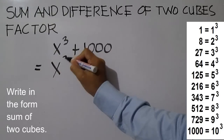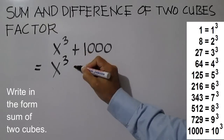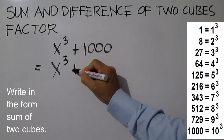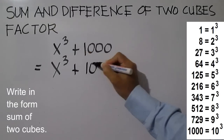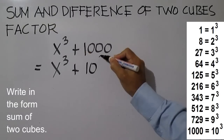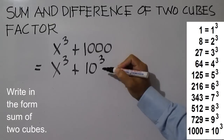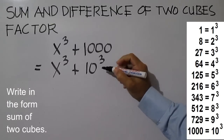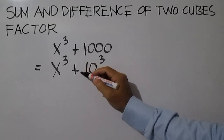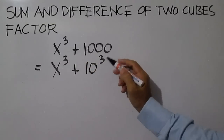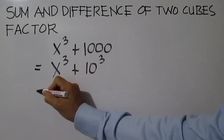Write in the form sum of two cubes: x cubed plus 10 cubed, a cube plus a cube.